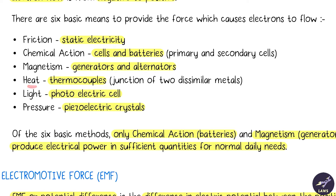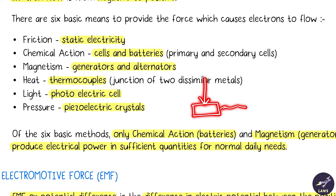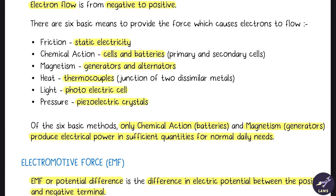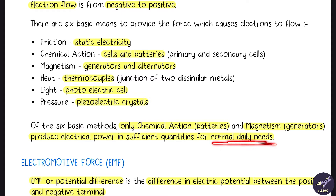Then we have heat — thermocouples — where two different metals are joined together and when heated they heat at a varied rate, creating a potential difference that generates electricity. We also have photoelectric cells, where light falling on them generates electricity. Finally, piezoelectric crystals generate an electric current when pressure is applied. Out of these six methods, only chemical action (batteries) and magnetism (generators and alternators) produce electric power in sufficient quantities for daily needs.